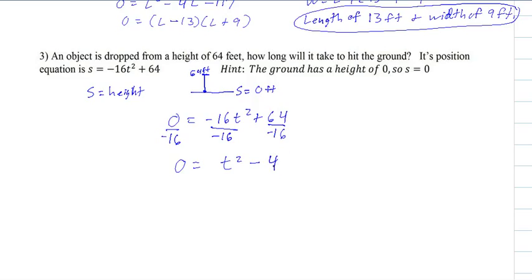And there's a nice factorable form. So it's t minus 2, t plus 2, t minus 2 equals 0, t plus 2 equals 0. And there it is again. Again, we don't have negative time. So time is 2.